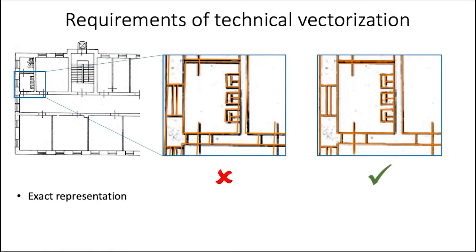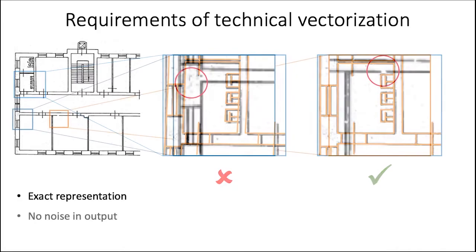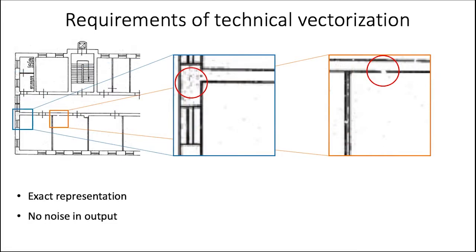The vector representation has to accurately approximate important parts of the image, such as straight lines or distinct angles. It must not contain the artifacts of the input image, such as imaging noise or missing parts of the lines.